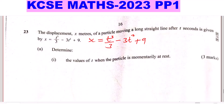Question 23, Part A: determine the values of t when the particle is momentarily at rest. You're given displacement, that is x, and you're required to get values of t when the particle is at rest. One thing you're supposed to understand is that the particle will be at rest when velocity equals zero. But we don't have velocity, we have displacement. When you're given distance, you differentiate distance to get velocity.